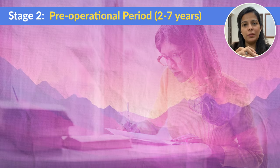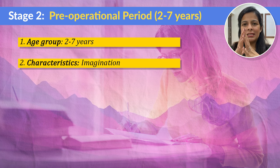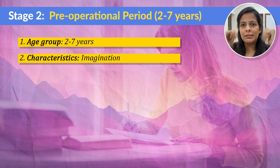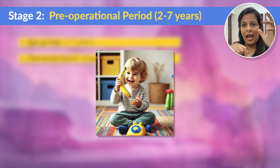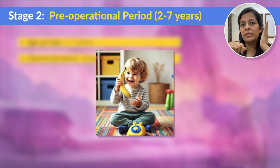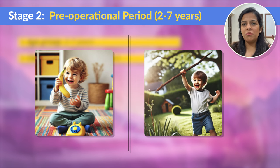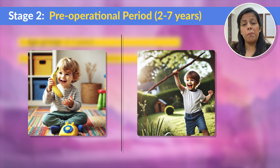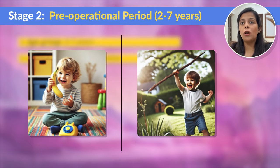Next up is the Pre-operational period, when kids are between 2 to 7 years old. This is the phase when they start using their imagination, and it's remarkable. They'll turn anything into anything. For example, if you give a kid a banana, he'll hold it to his ear and start having a full conversation, pretending it's a phone. Or a kid might pick up a stick and suddenly start using it as a sword — they'll be a knight with shining armour. They don't need fancy toys; anything around them can become part of their imaginary world. Imagination plays a very important role in cognitive development at this stage.